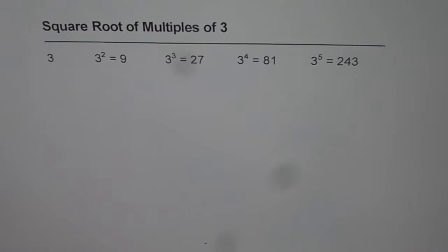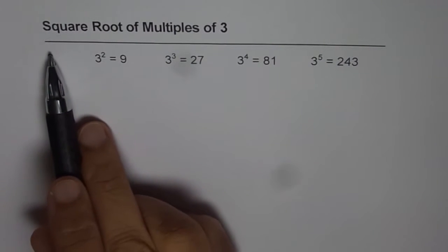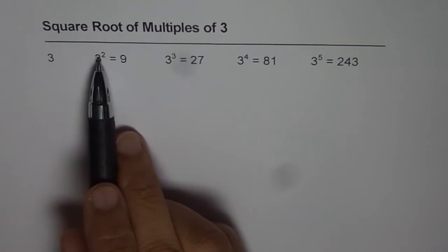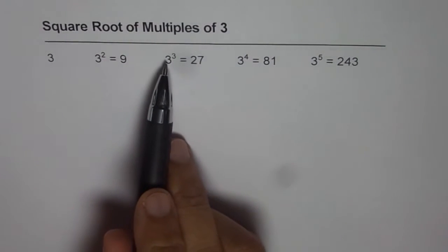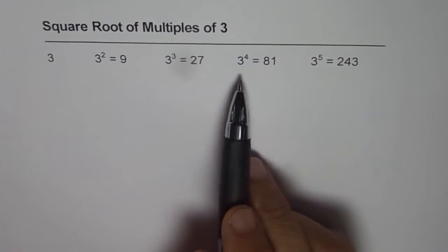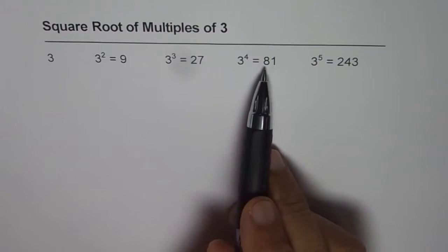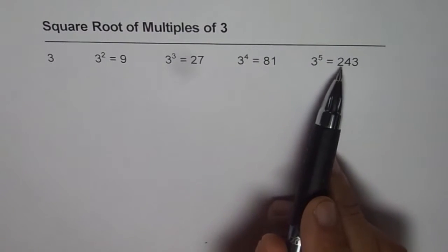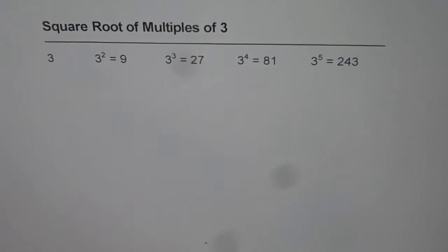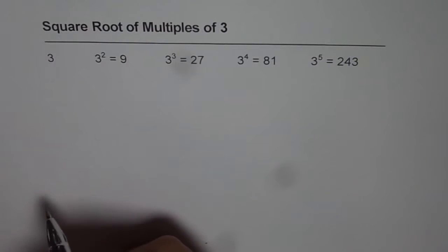I am Anil Kumar and in this video we will explore square root of multiples of 3. Here I have 3 to the power of 1 is 3, 3 to the power of 2 is 9, 3 cube is 27, 3 to the power of 4 is 81, and 3 to the power of 5 is 243. So we have a list of powers of 3, and we will see how to find square root of these numbers.